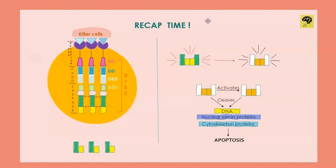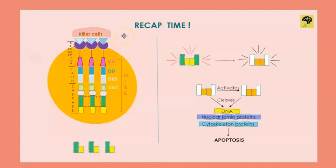You can skip this if you're already thorough with the intrinsic pathway — go watch that video if you haven't watched it yet. So, extrinsic pathway, as the name suggests, is for external signals. These signals come in the form of trimeric ligands, carried usually by killer cells and TC lymphocytes. These ligands are trimeric and they attach with their receptors — the trimeric Fas receptors, known as Fas receptors and Fas ligands. Fas receptors have a death domain, which we call DD.